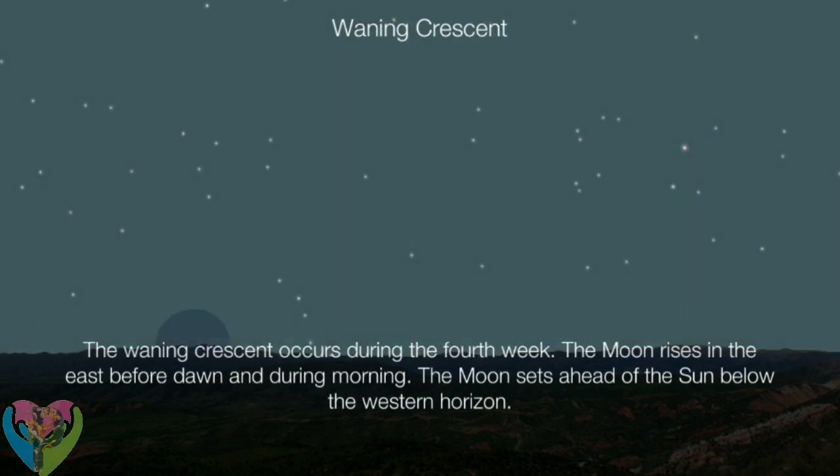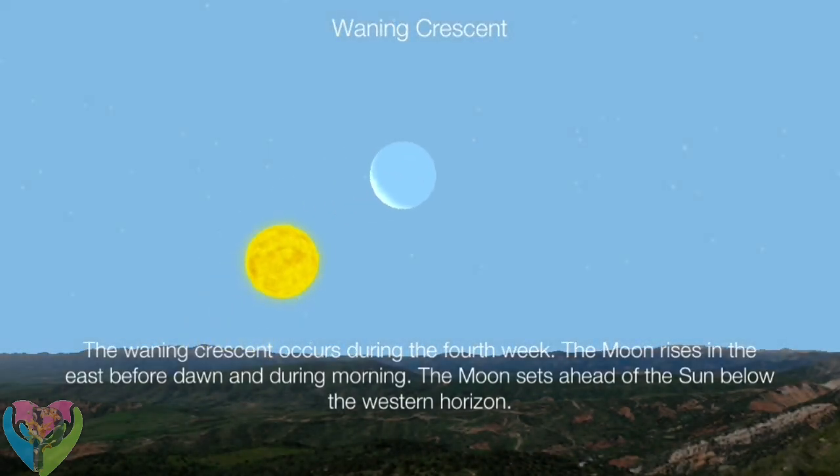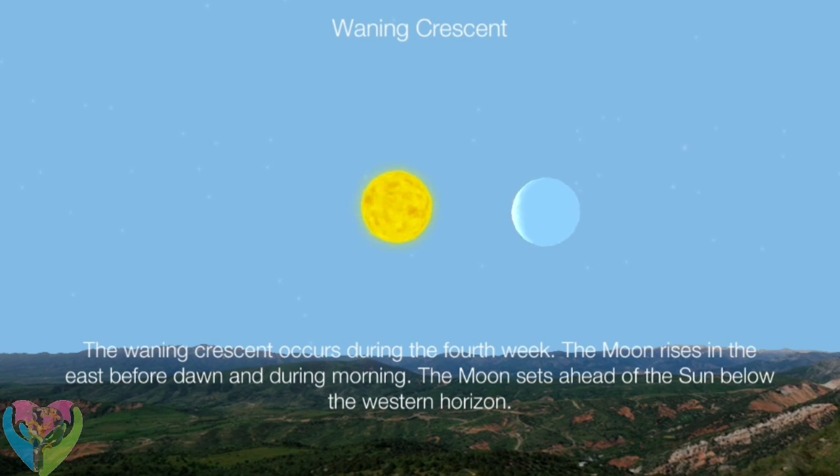The waning crescent occurs during the fourth week. The Moon rises in the east before dawn and during the morning. The Moon sets ahead of the Sun below the western horizon.